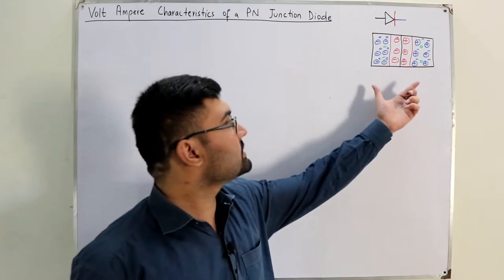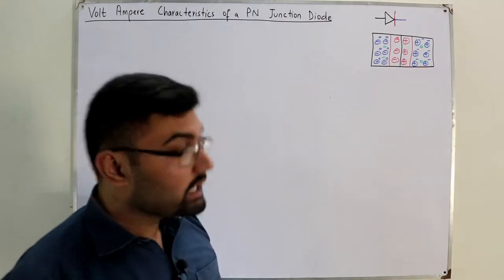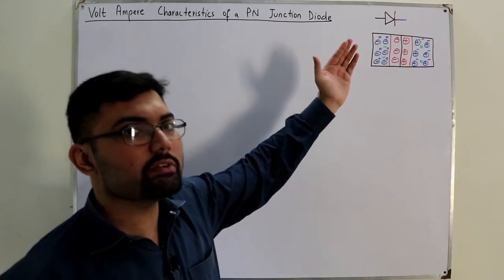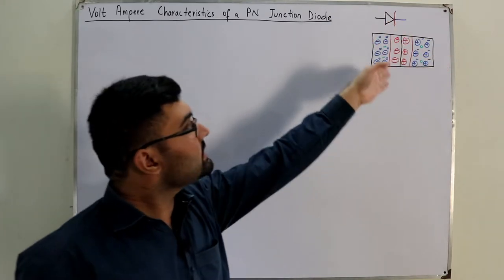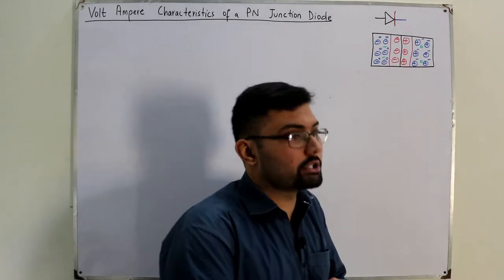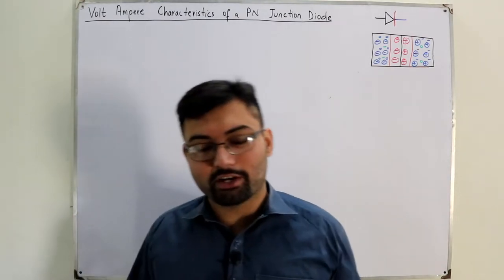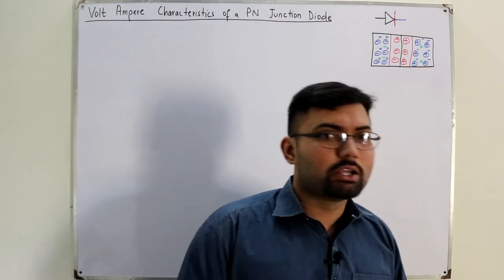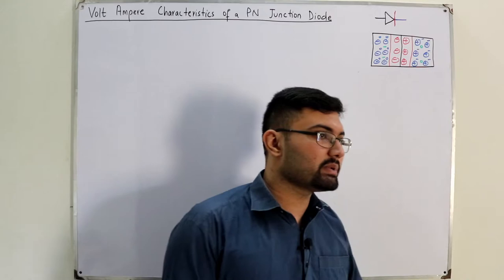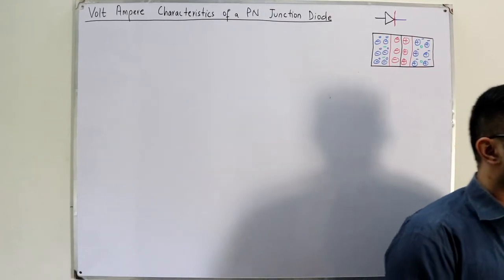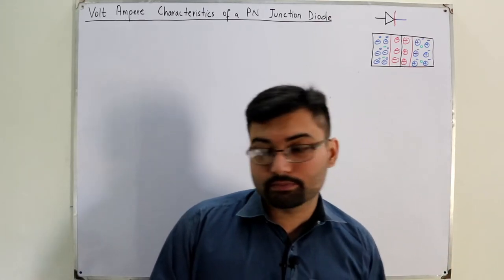I've drawn a P-N junction diode over here — the P-side, the N-side, and the junction. This is the depletion region. And this is the symbol of the diode. The black is the P-type, the blue is the N-type, and the red vertical line represents either the junction or the depletion layer — you confirm it from the book.